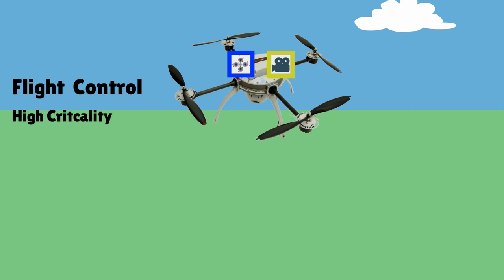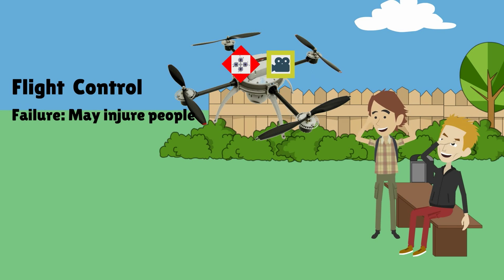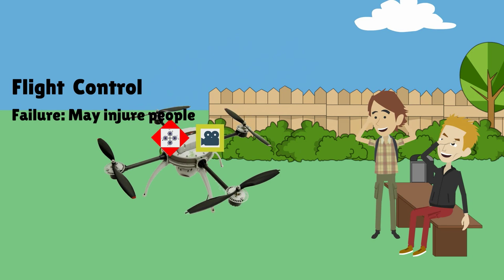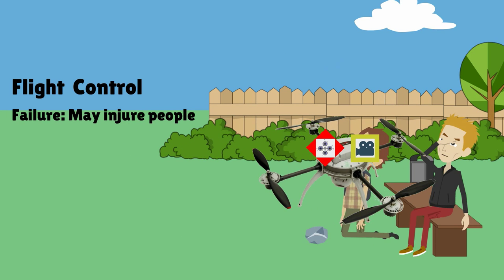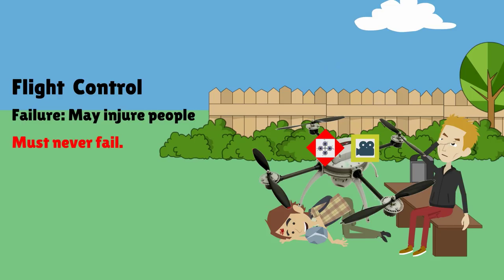The flight control is a high criticality system. When it fails, the quadcopter will crash land. This is dangerous if it crashes into a crowd of people and might lead to serious injuries. Failures of high criticality systems are not acceptable.